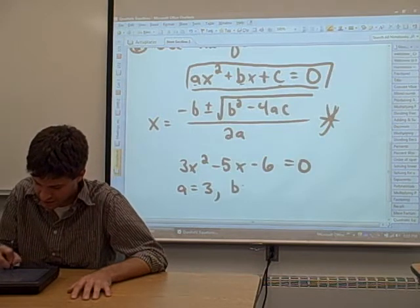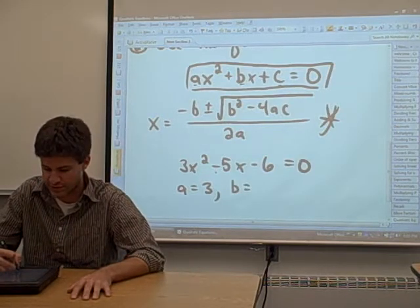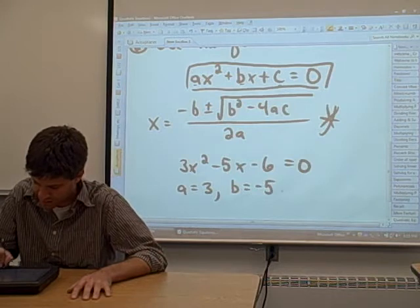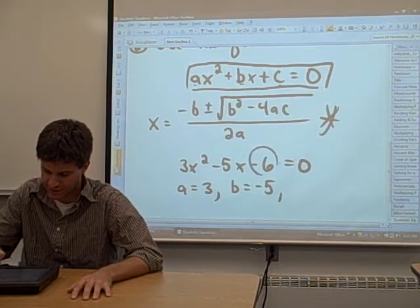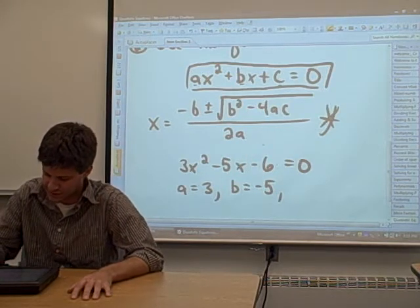We have B. It has a negative sign on it, you'll notice. So it's negative 5. C also has a negative sign on it in our problem. It's a negative 6.